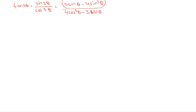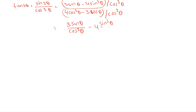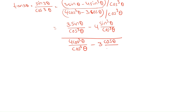We will divide both the numerator and denominator by cos³θ. The numerator becomes: 3 sin θ / cos³θ − 4 sin³θ / cos³θ. For the first term, 3 sin θ / cos³θ can be written as (3 sin θ / cos θ) × (1 / cos²θ), which equals 3 tan θ · sec²θ.